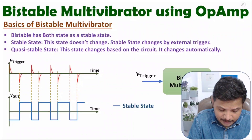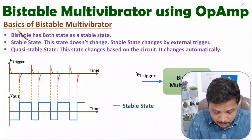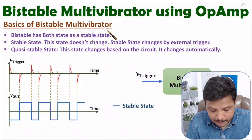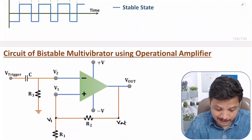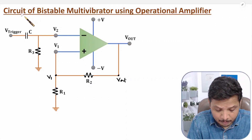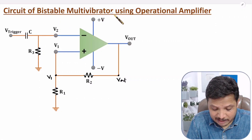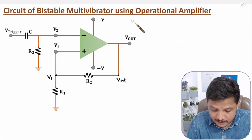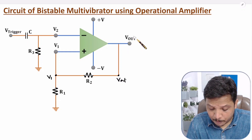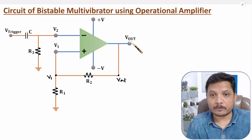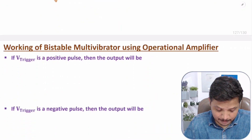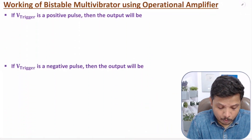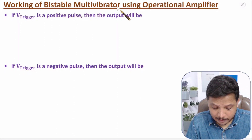First I'll be explaining you basics of bistable multivibrator. After that, I'll explain you the circuit diagram of bistable multivibrator using operational amplifier. With this circuit, I'll explain you the output equation. And based on the output equation, I'll explain you working of bistable multivibrator.